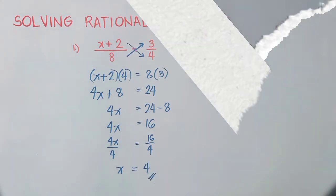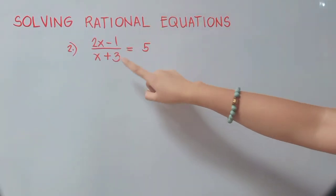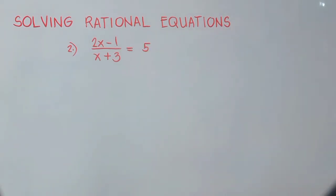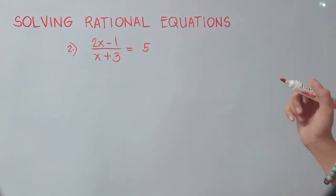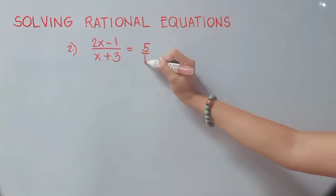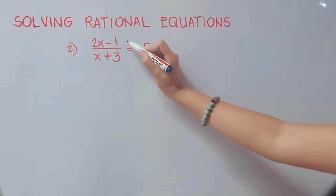Let us now proceed to number 2: (2x - 1)/(x + 3) = 5. As you can see, we have a restriction here. We cannot have a solution of negative 3 because it will make our denominator 0, which is undefined. So to cross multiply this one, let us place 1 as the denominator of 5.